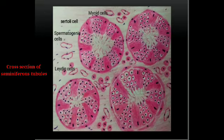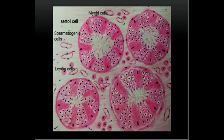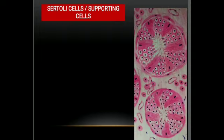Each seminiferous tubule consists of various types of cells forming the germinal epithelium. In a sectioned picture of the testis, we can see the seminiferous tubule, which shows the presence of various cell types: the supporting cells or Sertoli cells, the interstitial cells or Leydig cells, and clusters of various spermatogonial cells. Additionally, in between the seminiferous tubules, we can see connective tissue embedded with blood vessels.